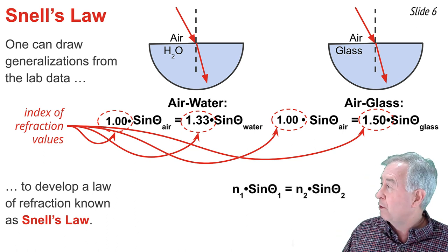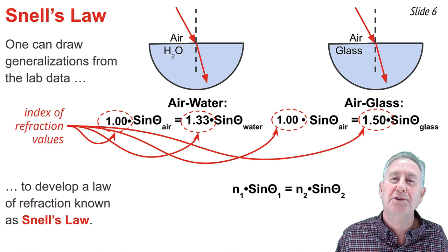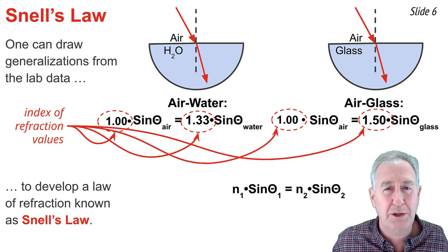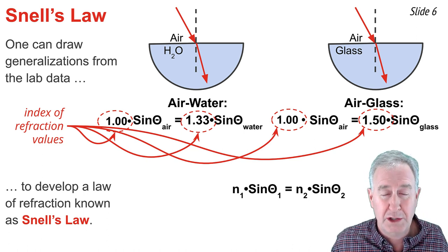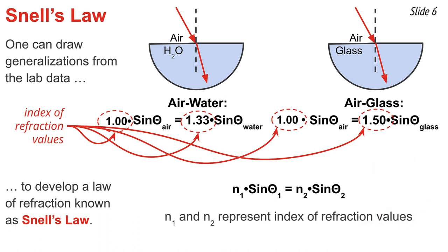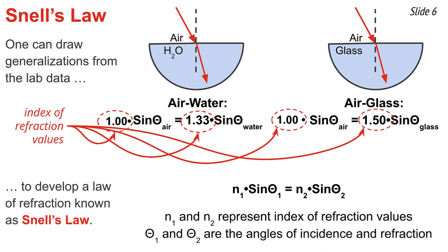Snell's Law can be stated in equation form as: n1 times the sine of theta1 equals n2 times the sine of theta2. In this equation, n1 and n2 represent the index of refraction of the two materials on opposite sides of the boundary, and theta1 and theta2 are the angles of incidence and refraction as measured with respect to the normal line. This is the Snell's Law equation.